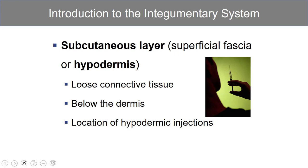Underneath the dermis is the subcutaneous layer, or the hypodermis, where hypo refers to below dermis. This is also connective tissue, and it is the site for hypodermic injection. The needle of a hypodermic needle is just long enough to penetrate the epidermis, penetrate the dermis, and to deliver the product directly into the hypodermis.